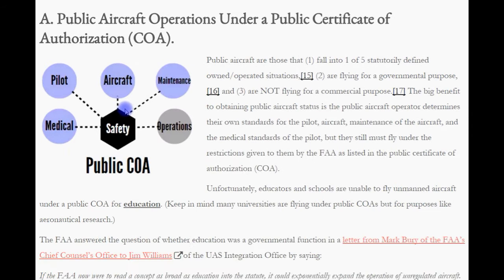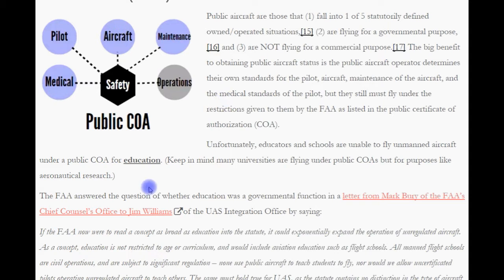Public aircraft operations under a public Certificate of Authorization, or COA. Public aircraft are those that fall into one of five statutorily defined owner-operated situations, are flown for a governmental purpose, and are not flying for a commercial purpose. The big benefit to obtaining public aircraft status is the operator determines their own standards for the pilot, aircraft, maintenance, and medical standards of the pilots, but they still must fly under restrictions given to them by the FAA in the public COA. Unfortunately, educators in schools aren't able to fly unmanned aircraft under a public COA for education.